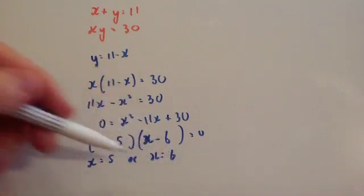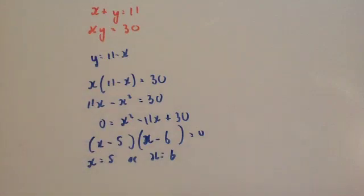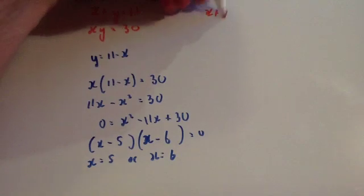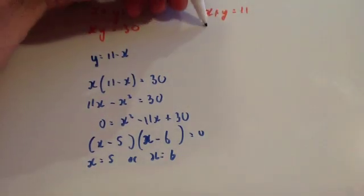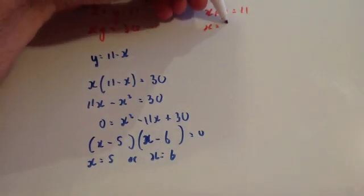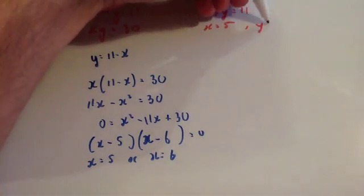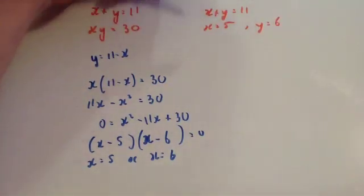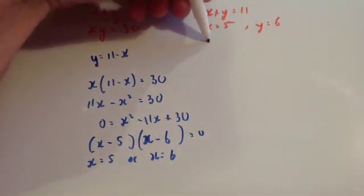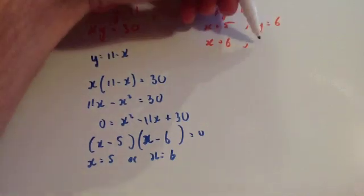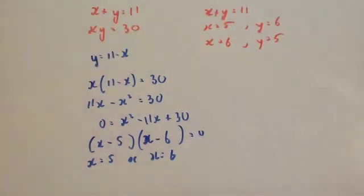Using x plus y equals 11: when x equals 5, y equals 6 (since 5 plus 6 is 11); and when x equals 6, y equals 5. So there are your solutions.